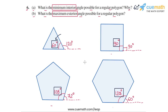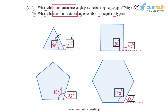Similarly, we can see the trend in exterior angles. We have 120 degrees, then 90 degrees, then 72 degrees, and 60 degrees. So the exterior angles are decreasing as the number of sides is increasing. The maximum possible exterior angle for a regular polygon is 120 degrees, and this happens when the interior angle is minimum. When the interior angle is 60 degrees — the minimum possible value — the exterior angle is at its maximum possible value of 120 degrees.